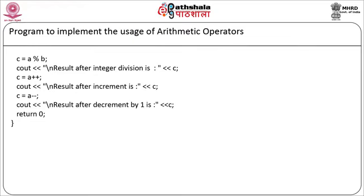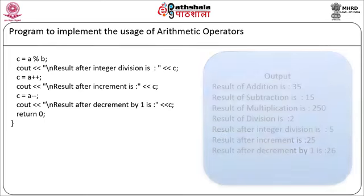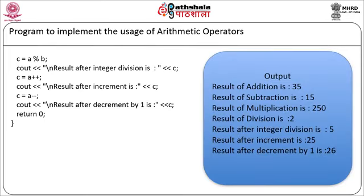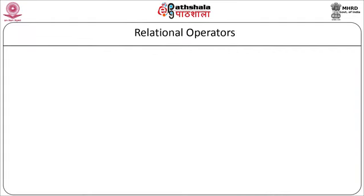When the above code is compiled and executed, it produces the result as: result of addition is 35, subtraction is 15, multiplication is 250, division is 2, after integer division is 5, after increment is 25, and after decrement is 26.